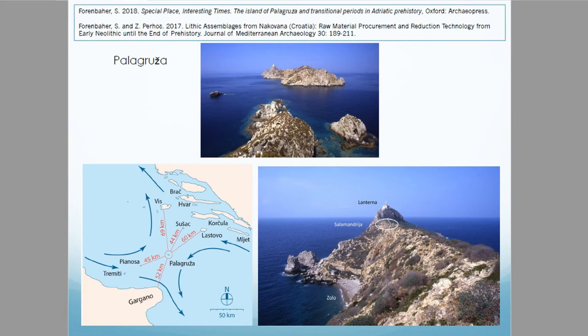As regards overseas expansion, recent research by Forenbaher on Palagrosa and Nakovana allows us to reconsider evidences connected to Cetina expansion. Palagrosa is a very tiny islet between Italy and Dalmatia and represents a key site by which to address the significance of Adriatic seafaring and seascape construction. Lacking all basic resources such as water and fuel, and therefore being unsuitable for formal settlement, the islet was used as an outpost for the Gargano chert supply network.